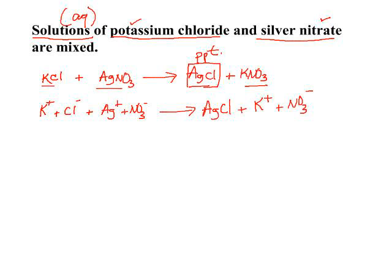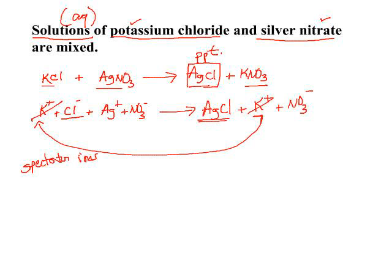Your net ionic equation takes any ions that exist on either side that are the same and cancels them out. These are called spectator ions. So your potassium ion has not undergone any change and cancels out. Your chloride ion has gone from an ion into the precipitate, so it stays in. Your silver ion is locked in the precipitate as a product, so it stays in. Your nitrate ion cancels. You write the ions that remain after canceling the spectator ions: the chloride ion and the silver ion on the left, and silver chloride on the right.